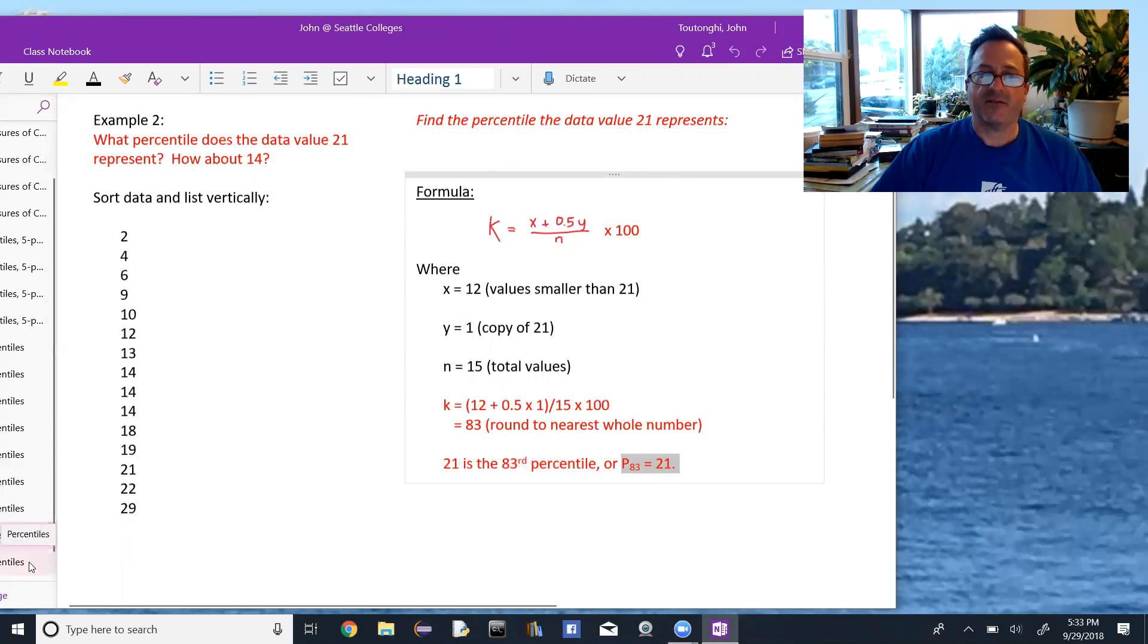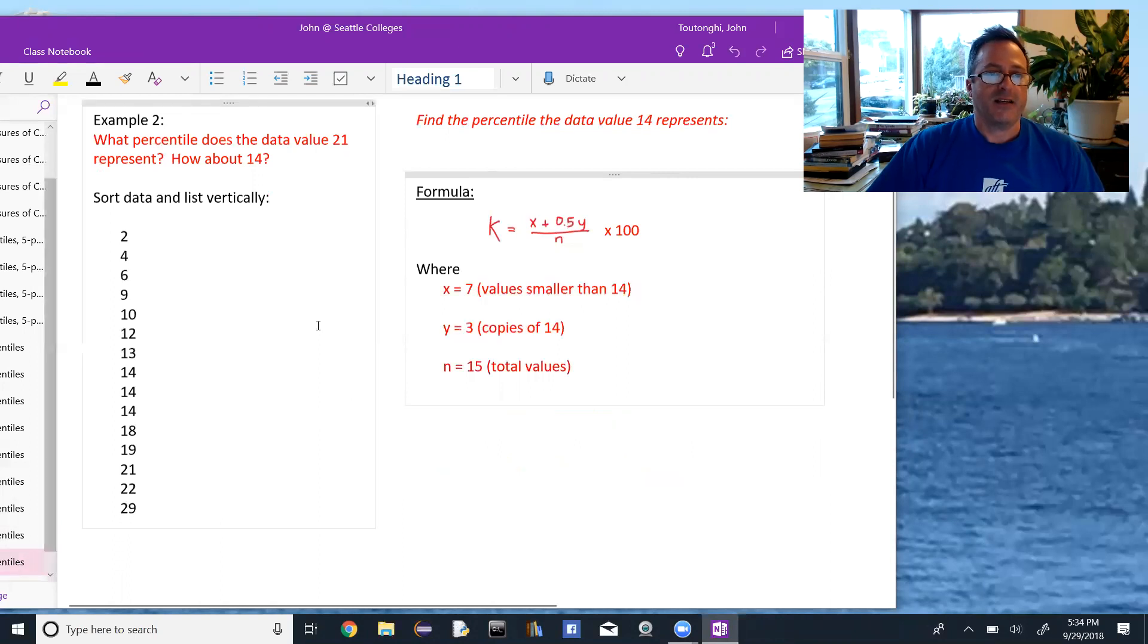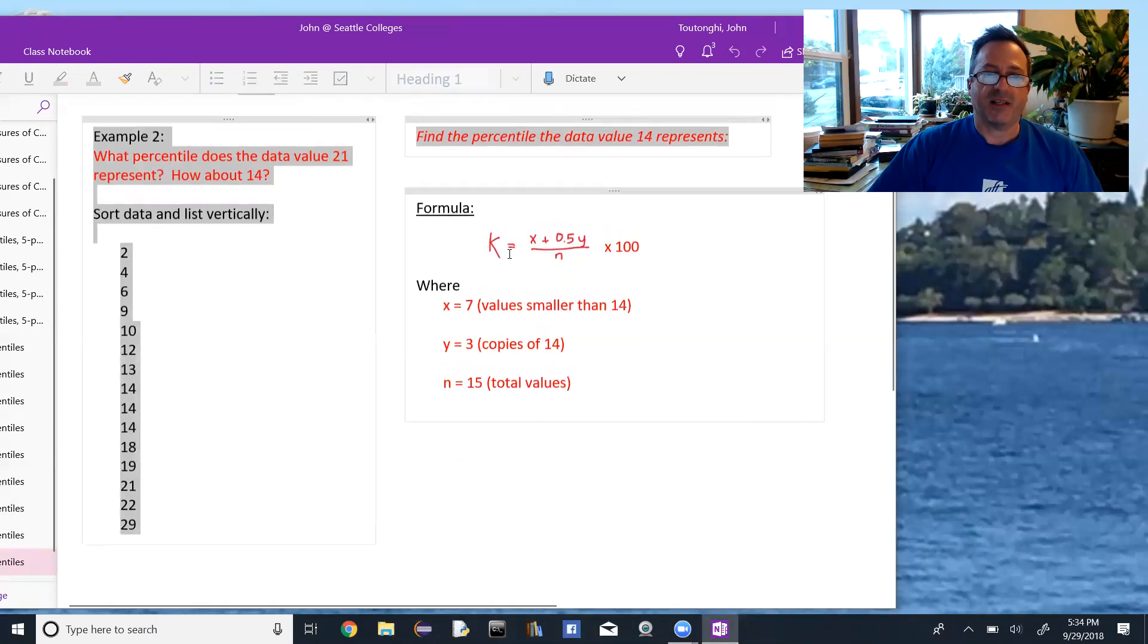Doing this for the data value of 14, what's going to change is that 14 occurs three times. So in the formula, the value for y is not 1. I'll look at that. Find the percentile that data value 14 represents. Again, it's the same formula, K equals x plus 0.5y divided by n, all times 100.